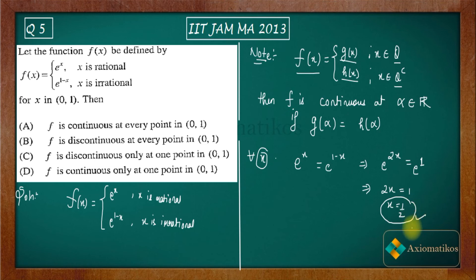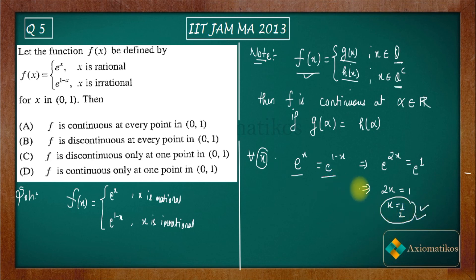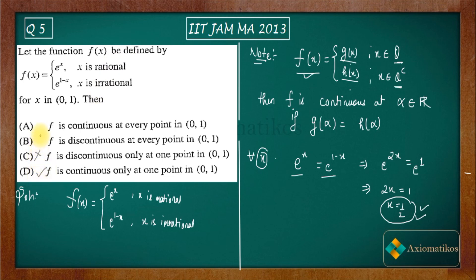So only at x = 1/2 is the function continuous. To summarize: if you have a function defined differently on Q and Q-complement, it is continuous only at those points where g(x) = h(x). Setting e^x = e^(1-x), we only get x = 1/2. That means f is continuous only at one point in [0,1], so option D is the correct answer, and options A, B, and C are incorrect. Thank you.